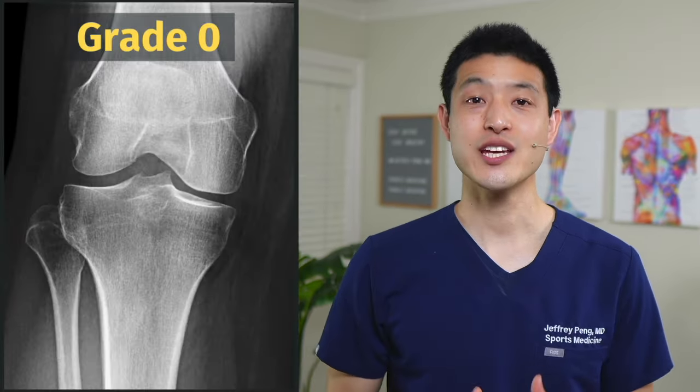It's graded on a scale from 0 to 4, with 0 being no signs of osteoarthritis and 4 being bone-on-bone arthritis. Let's go through some x-ray examples of what these stages might look like.